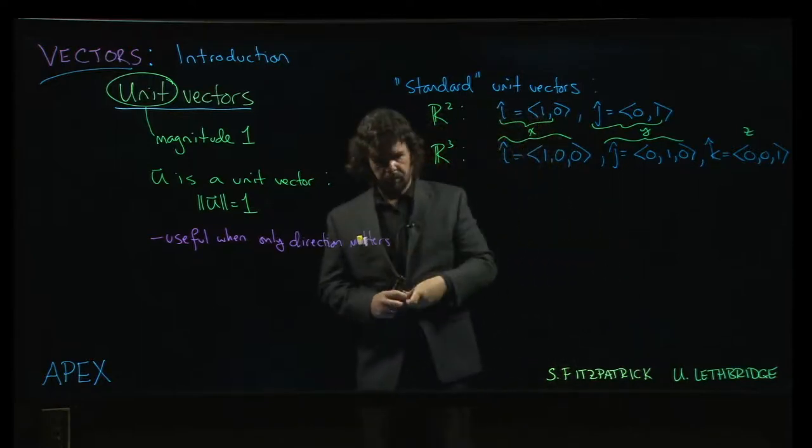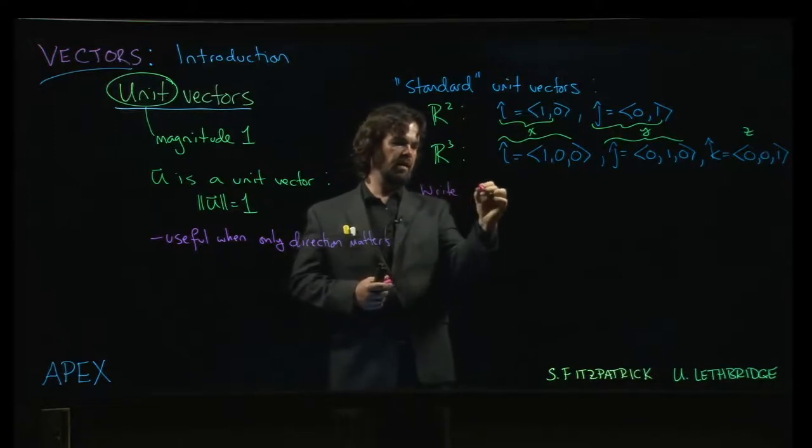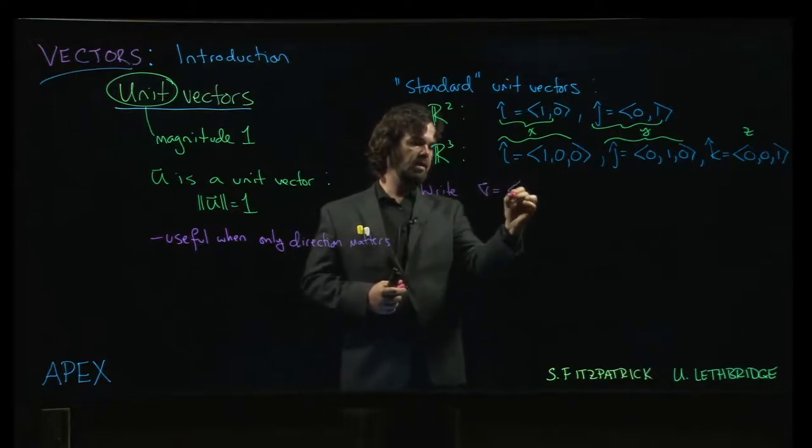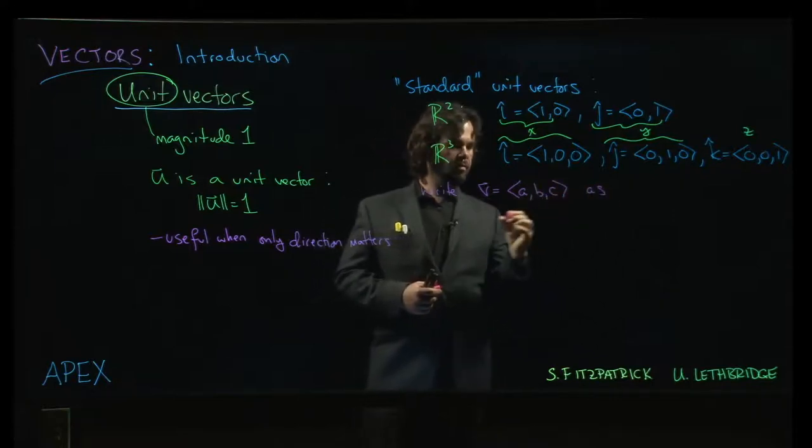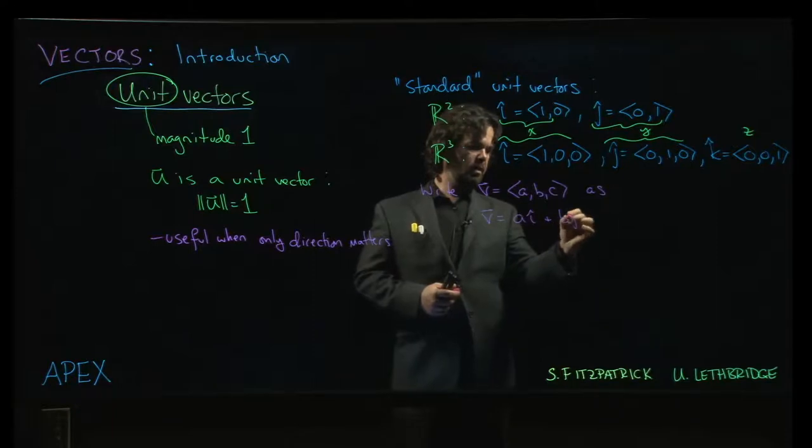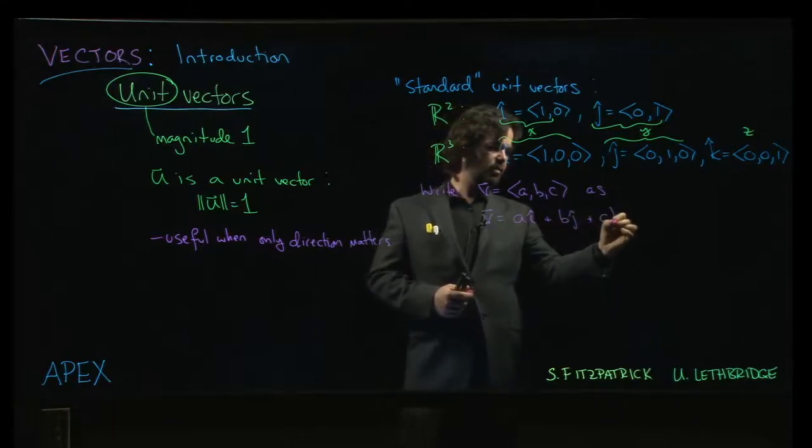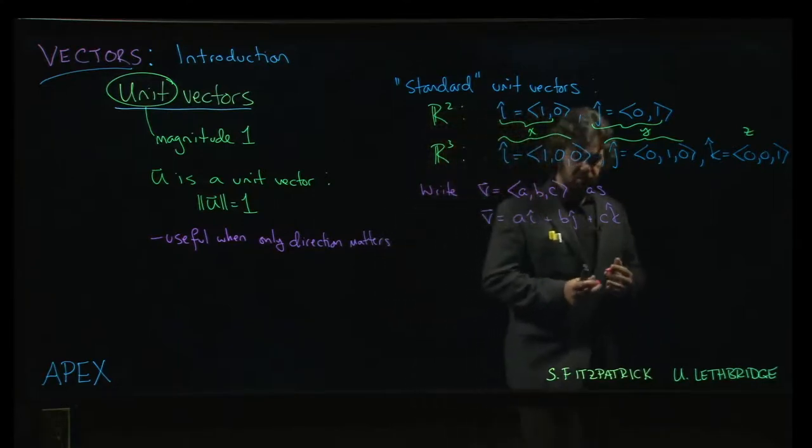And then what happens is that you can write a vector—say I have a vector v = (a, b, c)—well, you can write it as v equals a times i plus b times j plus c times k. You can write it in terms of those standard unit vectors.